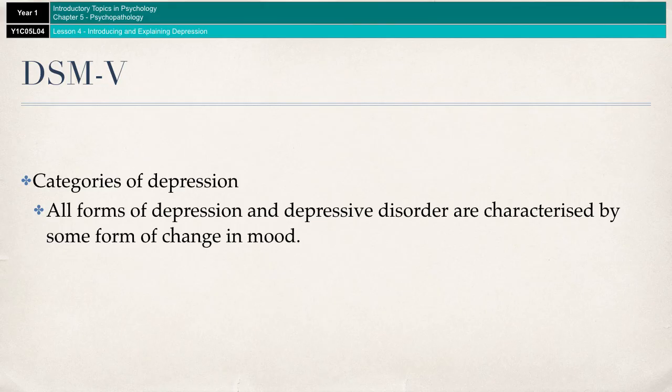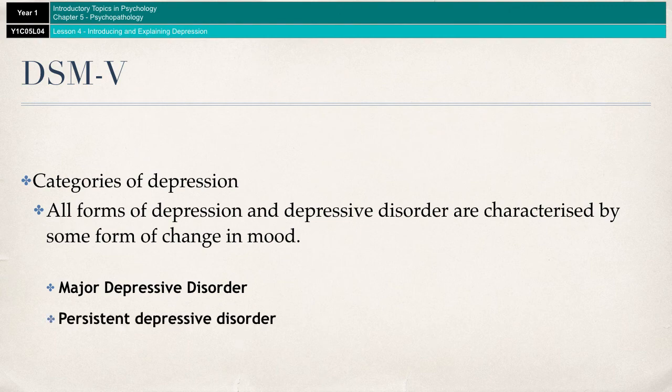The major ones that the DSM-5 looks at and distinguishes between are major depressive disorder and persistent depressive disorder. The main difference between the two being that persistent depressive disorder is more longer term and/or reoccurring, whereas major depressive disorder is not. There are many more different subtypes of depression, but for the purposes of A-level psychology, those are the two that it would be good for you to know.